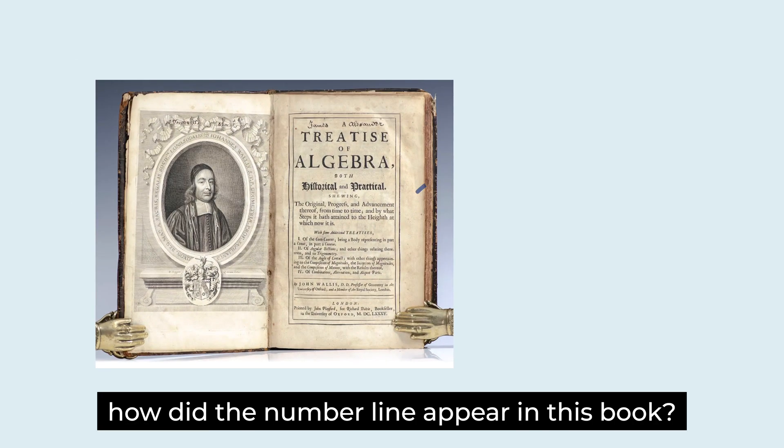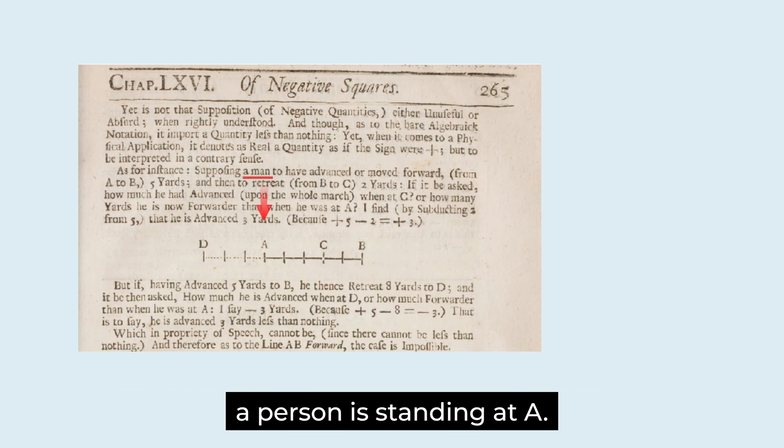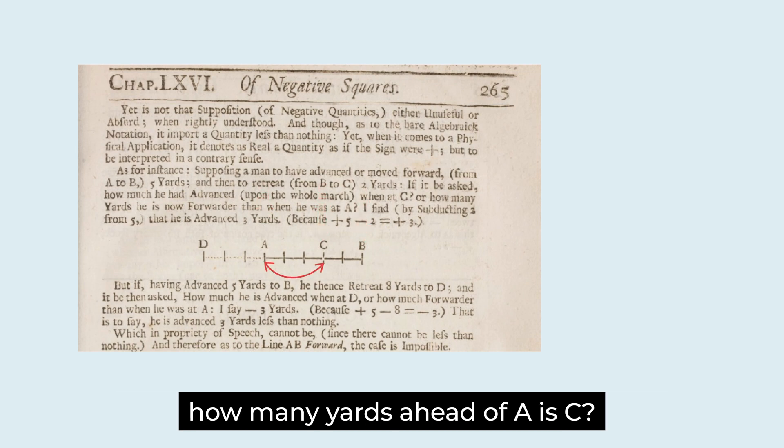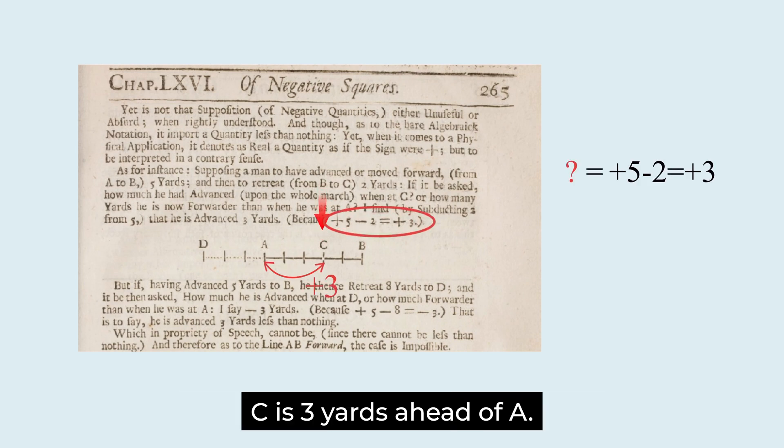How did the number line appear in this book? This is exactly what it looked like. A person is standing at A. He went forward 5 yards and moved back 2 yards. The position has changed from A to B to C. How many yards ahead of A is C? Plus 5 minus 2 equals plus 3. C is 3 yards ahead of A.